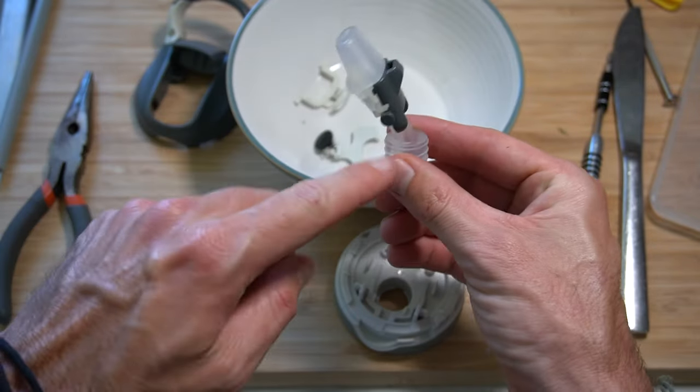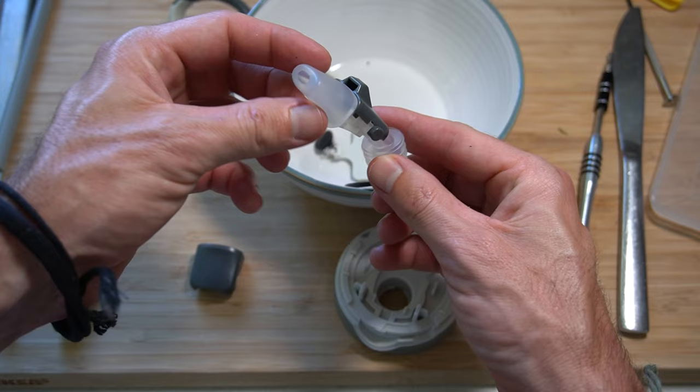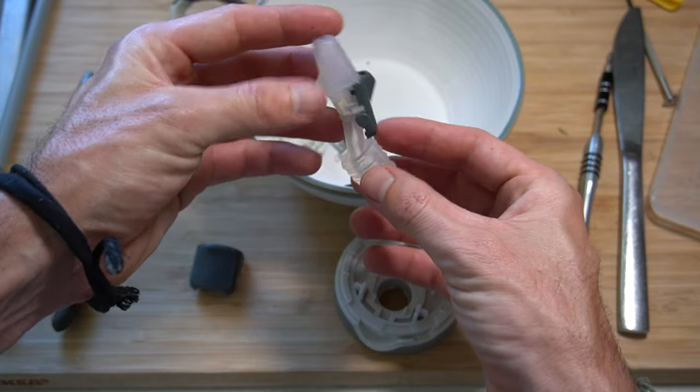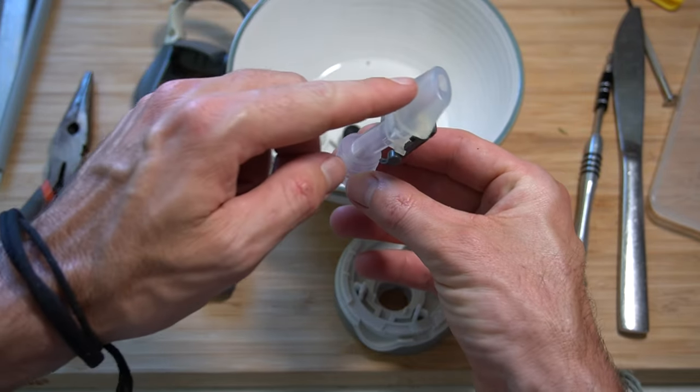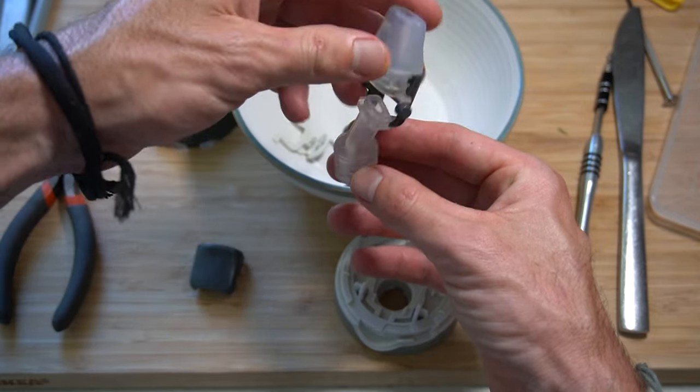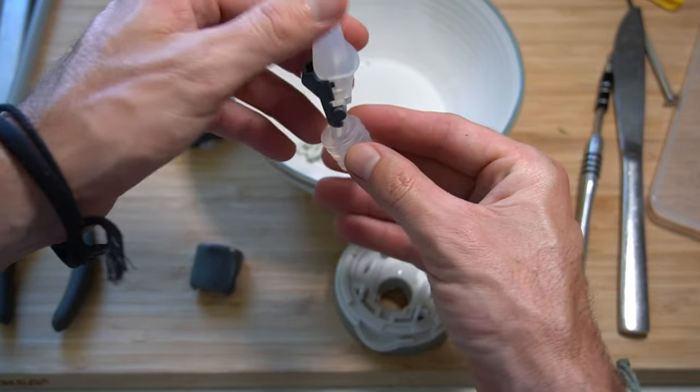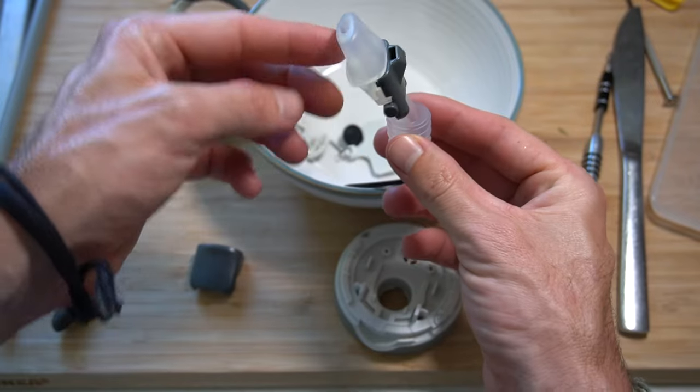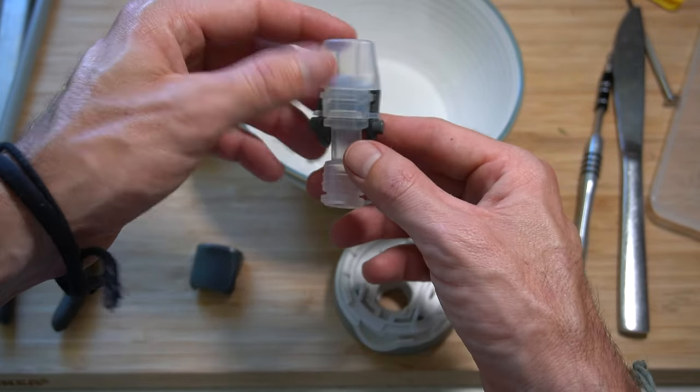But basically you want it to be so when this is in the lid standing up, this is pointing towards you with the bottom lip here. So if you have it the wrong way, when it's standing up, the bottom part of the spout will point upwards and that's incorrect. So we flip that around. Now we can see the bottom spout points downwards, which is good.